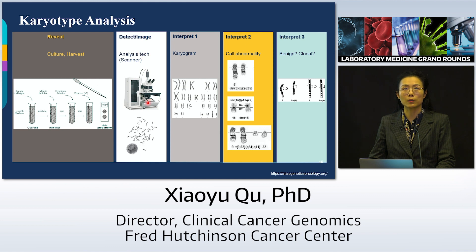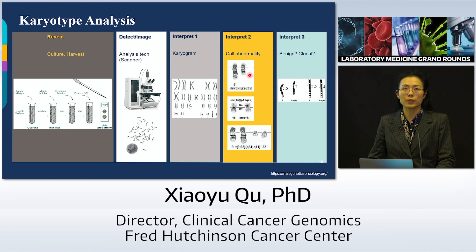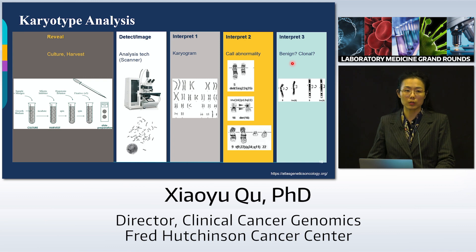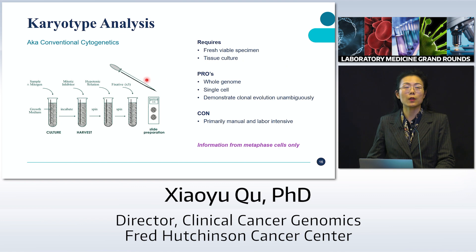The first whole genome assay is karyotype. Karyotype reveals abnormality through culture and harvest, where chromosomes are banded and prepared onto slides, then detected through microscopy — either a slide scanner or the technologist looking under the microscope. The chromosomes are aligned into a karyogram and compared band by band to call abnormalities. It is a whole genome assay that looks at single cells, allowing unambiguous demonstration of clonal evolution.